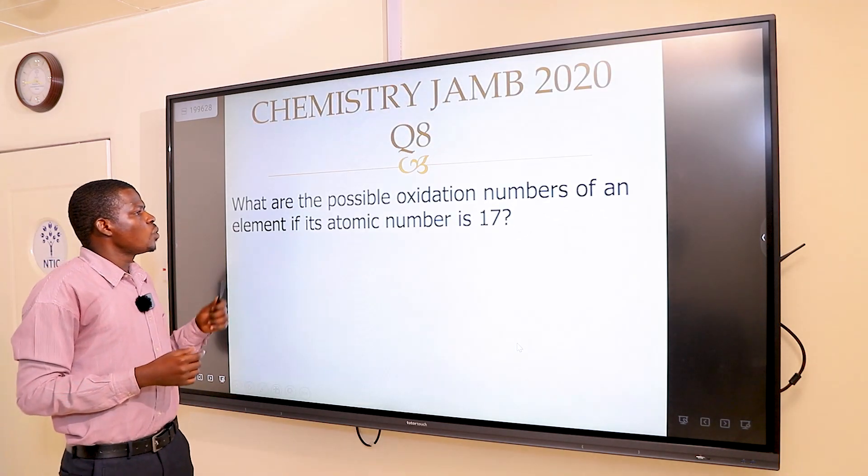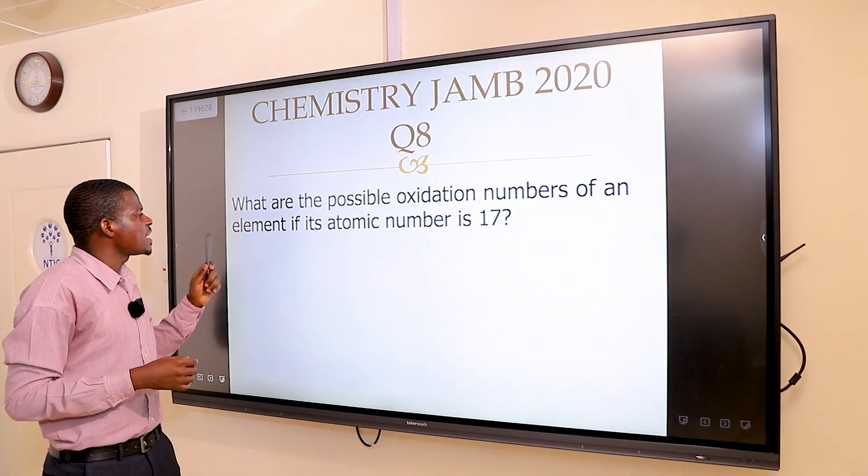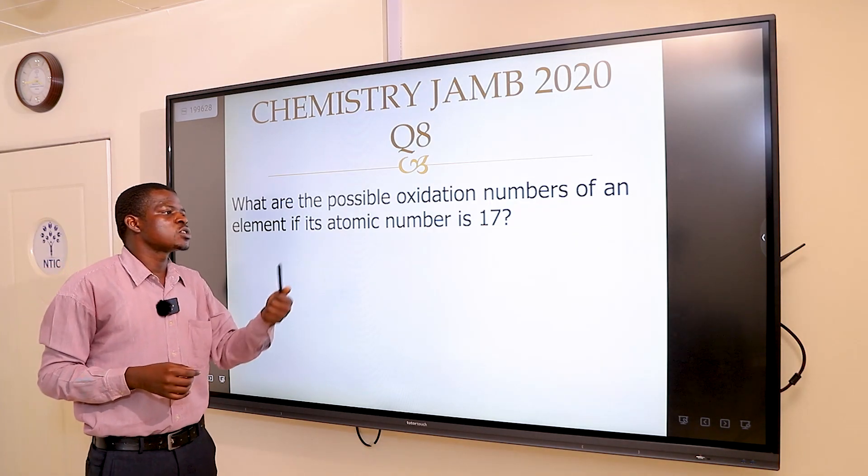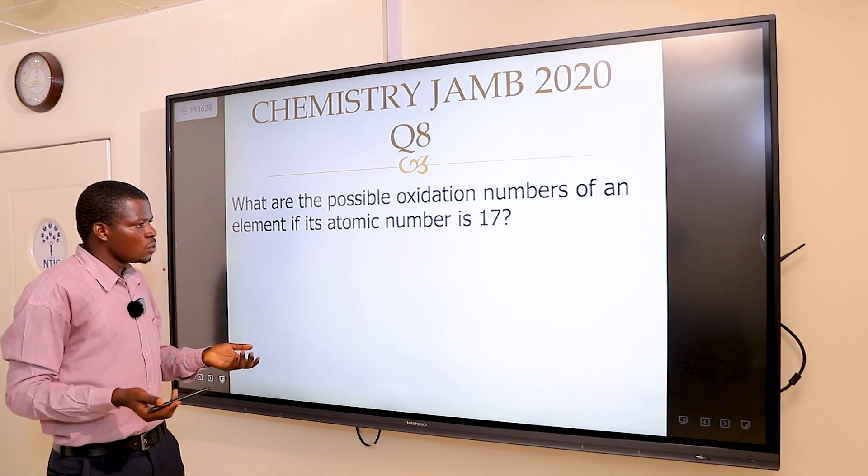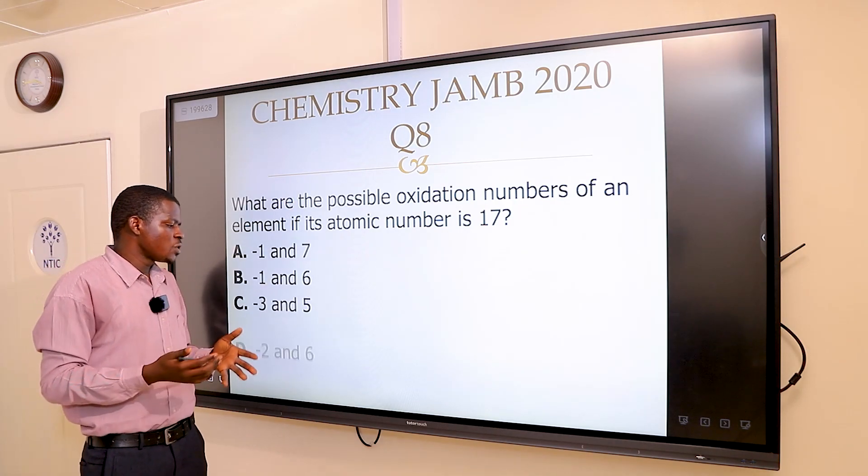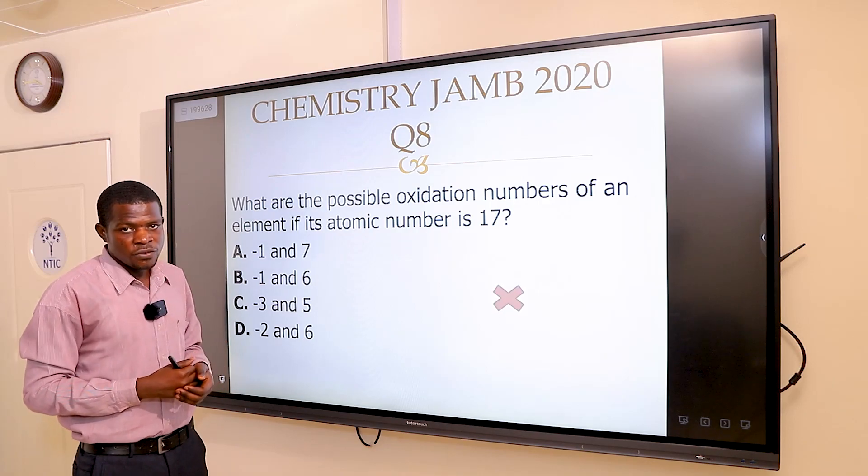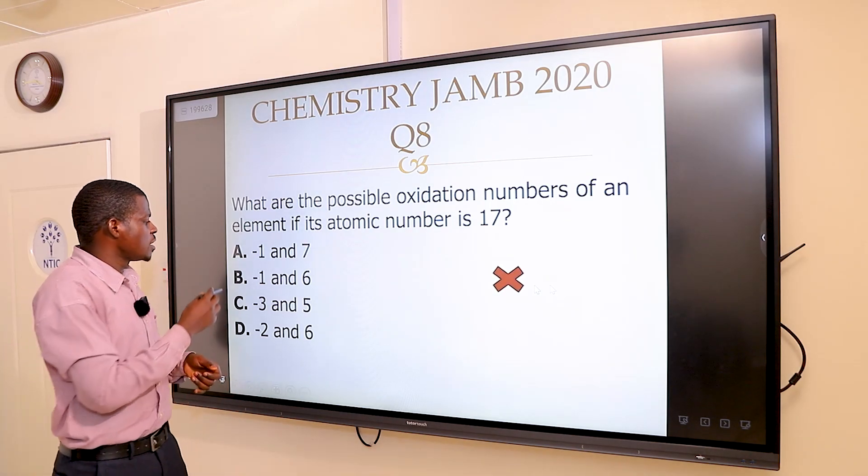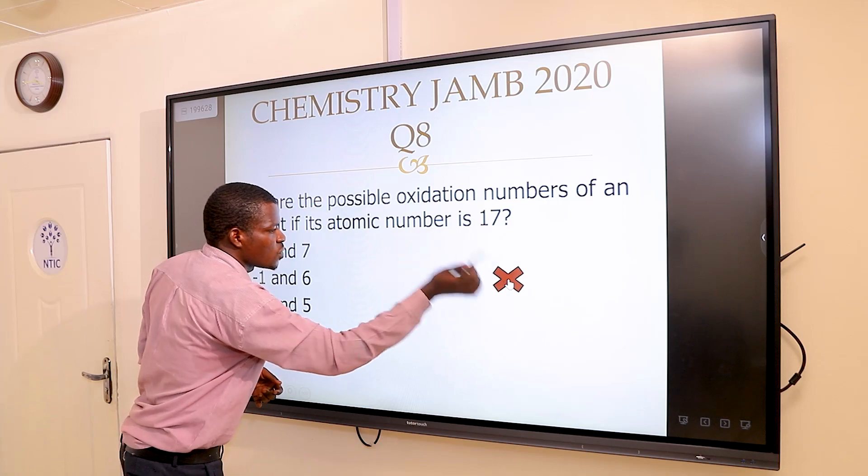Question eight says: what are the possible oxidation numbers of an element if its atomic number is 17? The options were: A, minus one and seven; B, minus one and six; C, minus three and five; D, minus two and six. B is wrong. Minus one and six is wrong.